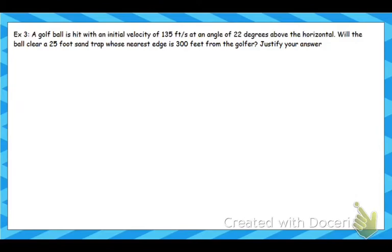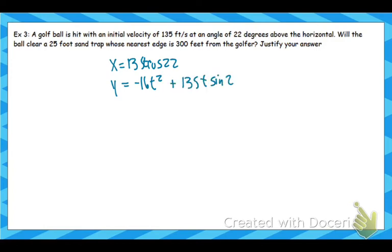Alright, so let's look at our next one. We have a golf ball hit with an initial velocity of 135 feet per second at an angle of 22 degrees. There's my x equals — we're in feet per second — and here's my y equals. So we want to know if this ball is going to clear a 25-foot sand trap whose nearest edge is 300 feet from the golfer. We're trying to figure out will this ball still be in the air after 325 feet.